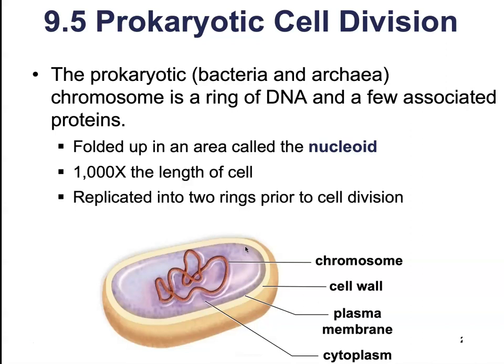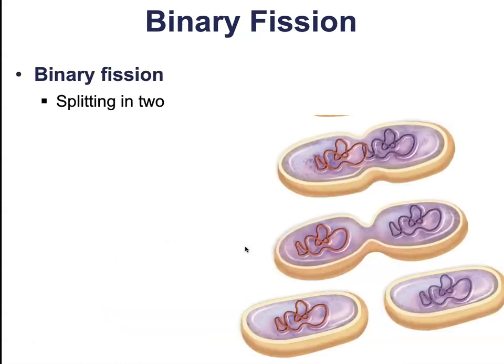This DNA is roughly a thousand times the length of the cell. So before we begin cellular replication, we want to make sure that both of our daughter cells are going to have the exact same genetic information. We are going to have to replicate this DNA before we undergo cellular division.